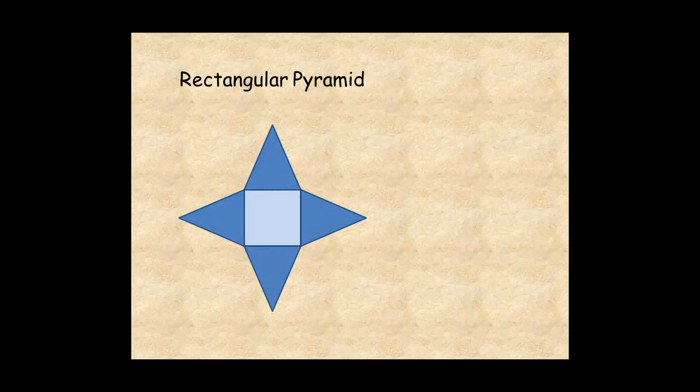Here is the net of a rectangular pyramid. The base is a square 7 centimeters on a side. The lateral faces are four congruent triangles, each with height 9 centimeters.